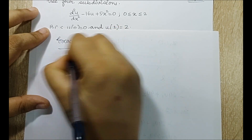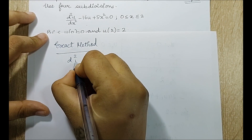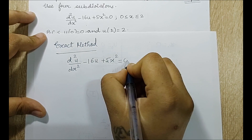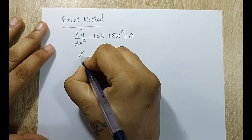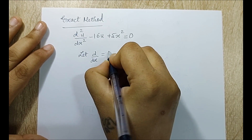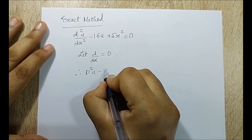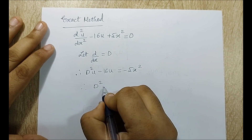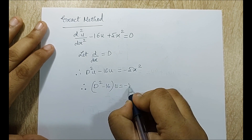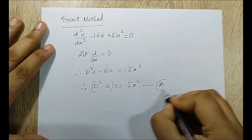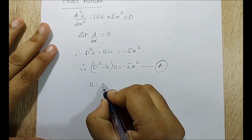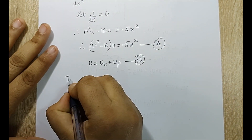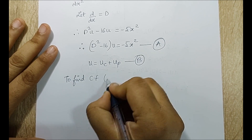The governing equation is d²u/dx² − 16u + 5x² = 0. Writing D = d/dx, this becomes (D² − 16)u = −5x². I need to find u as the sum of the complementary function (u_c) and the particular integral (u_p).